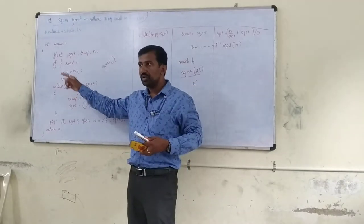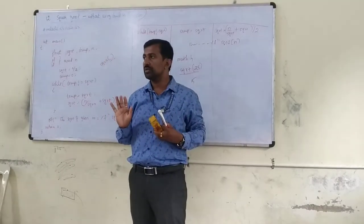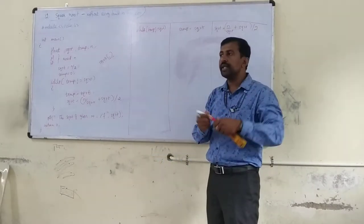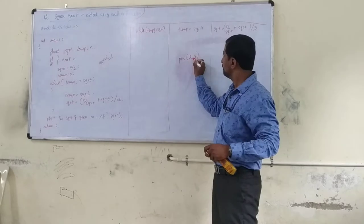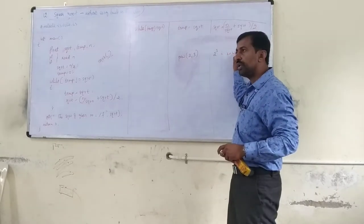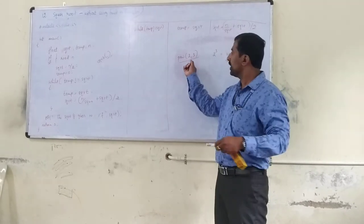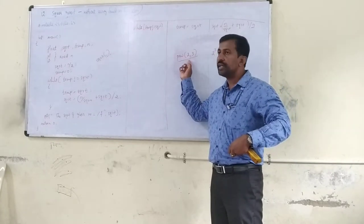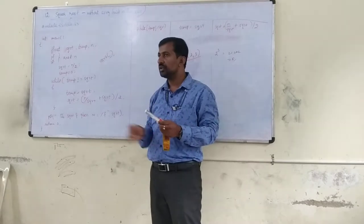You can use different logic — that is fine. It is not compulsory that you write the same program; what I need is the output. Similarly, like sqrt, there is another function called the power function — pow(2, 3). What does that mean? It is nothing but 2 to the power 3, which equals 8. If you use this function directly, it gives the result 8 without writing any code. All these functions are defined in math.h. So without using math.h, without using built-in functions, you have to find the result — and that is what we are doing today.